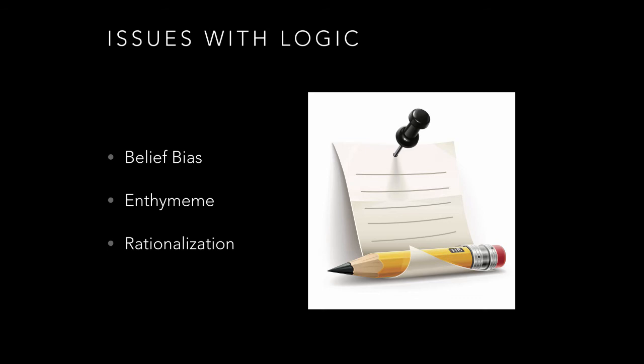Some more issues with logic. We have our belief bias. We oftentimes think that arguments are valid if we agree with them or if they somehow are congruent with our frame of knowledge or our schema of knowledge. Enthymemes - enthymemes are incomplete arguments, for example, a syllogism that's missing a premise. And of course, we've already talked about rationalization, and that's the manufacturing of reasons to justify beliefs.